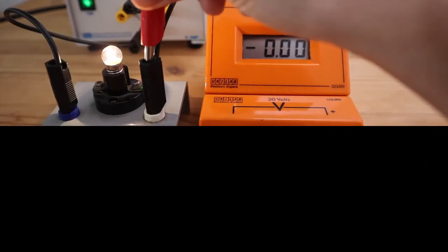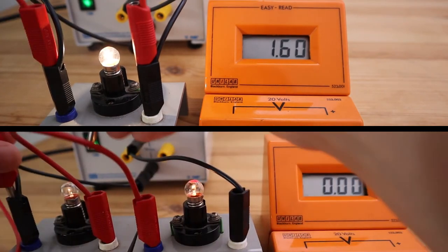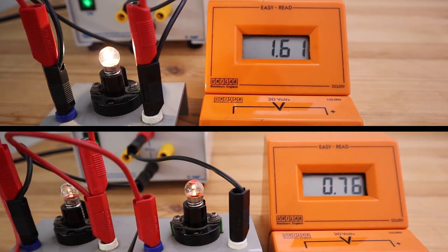In this circuit, all the supply voltage is delivered to the single bulb. But the supply voltage in the second circuit is shared between the two bulbs, and that is why they don't shine as bright.